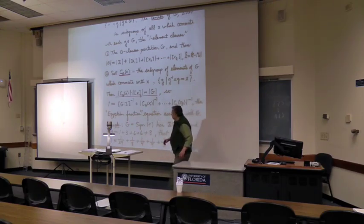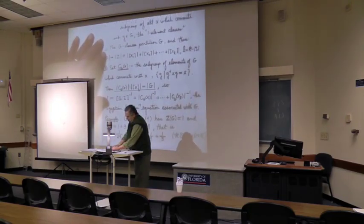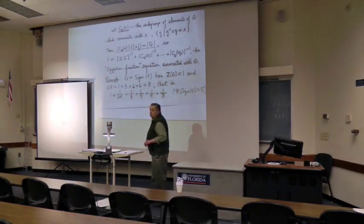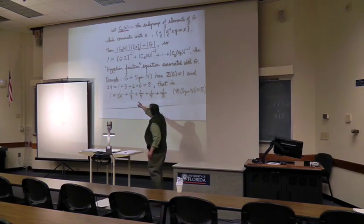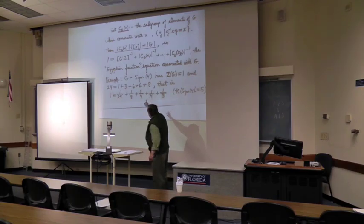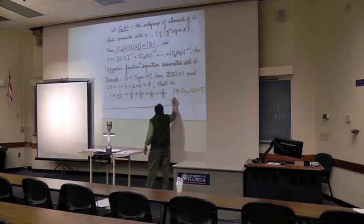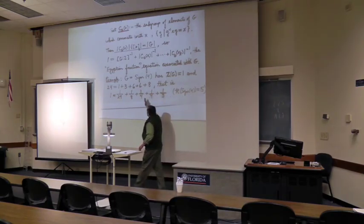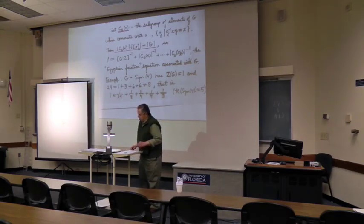I have an example down here because everybody likes the symmetric group. So I have an example of the symmetric group on four elements. You know its size is 24. It has trivial center. Here's its decomposition into the class sizes: one, three, six, six, eight. When I divide by 24 I get this. Now the number of classes is five.